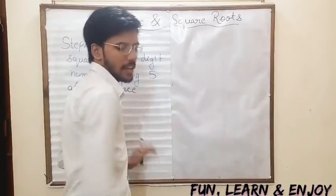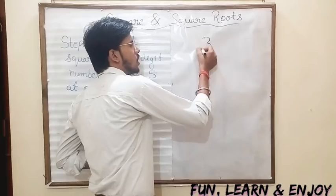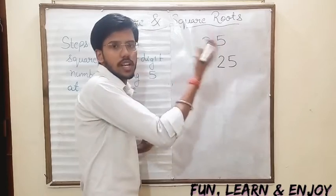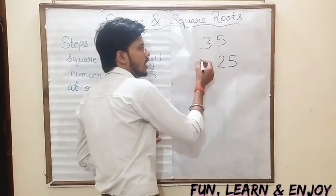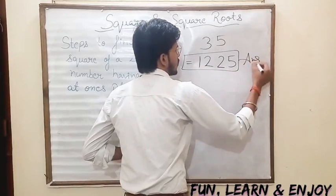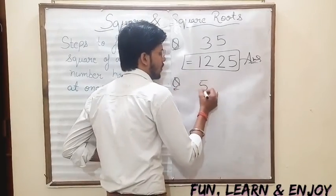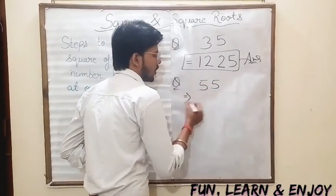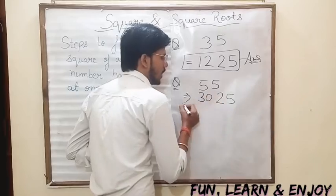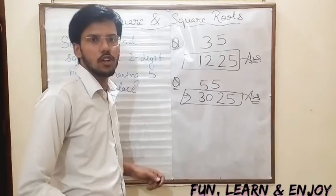Let's try two more numbers. Let's take another number — that is 55. So again, 5 fives are 25, and after 5 comes 6, so 6 fives are 30. Our answer is 3025.